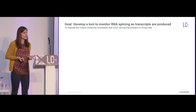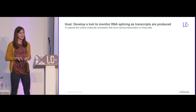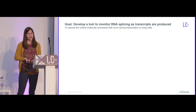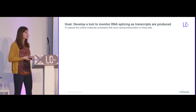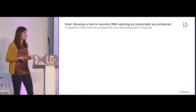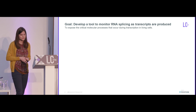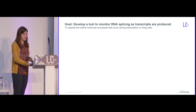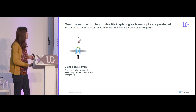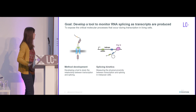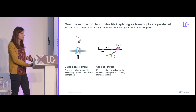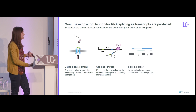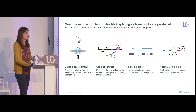The goal of my thesis was to develop a tool that would allow us to monitor RNA processing as transcripts are produced, in order to really look at how this is happening in living cells. Today I'm going to tell you about how I developed this method, and then about what we learned about the kinetics of splicing, the order of splicing, and how alternative splicing is related to this.